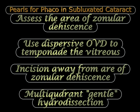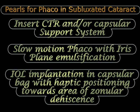These are the pearls for performing phacoemulsification in subluxated cataracts: assess the area of zonular dehiscence and choose the device or technique accordingly. Always use a dispersive viscoelastic like Viscoat to tamponade the vitreous. The incision should be placed away from the area of zonular dehiscence. Multi-quadrant gentle hydrodissection is a must to loosen cortical fibers so we don't need to pull on them and risk enlarging the area of dehiscence.